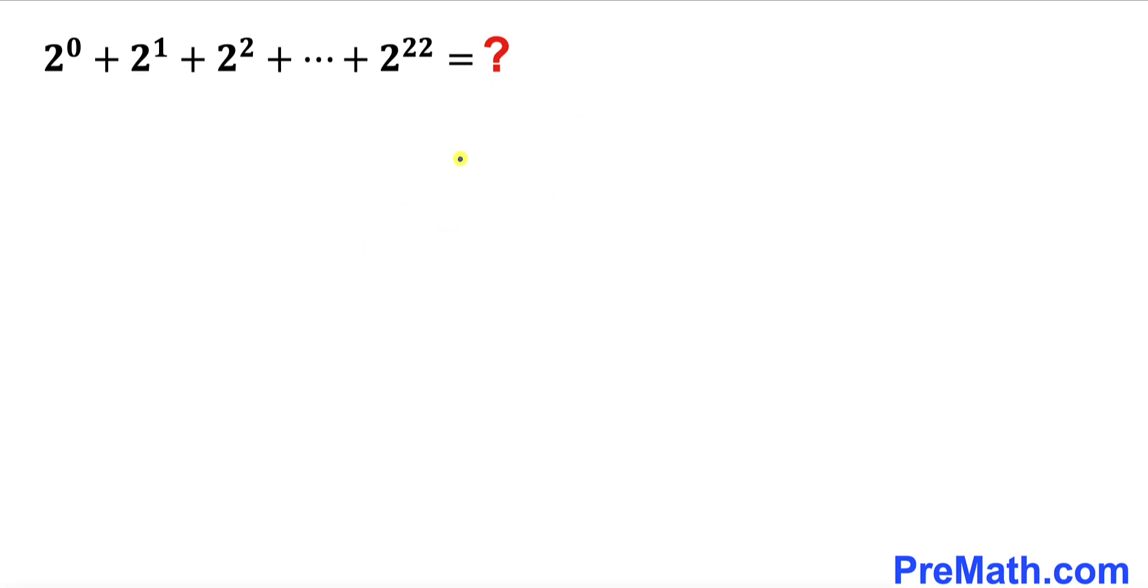Let's get started. We can see that 2^0 could be written as simply 1 and 2^1 is same as 2. So therefore our series is going to look like 1 + 2 + 2^2 + ... + 2^22, where 2^0 is same as 1, 2^1 is 2, and everything is exactly same.